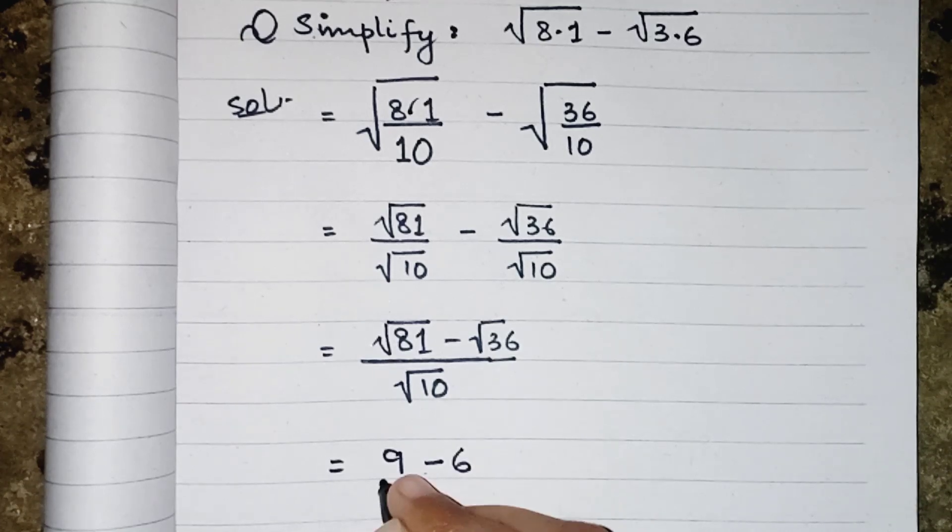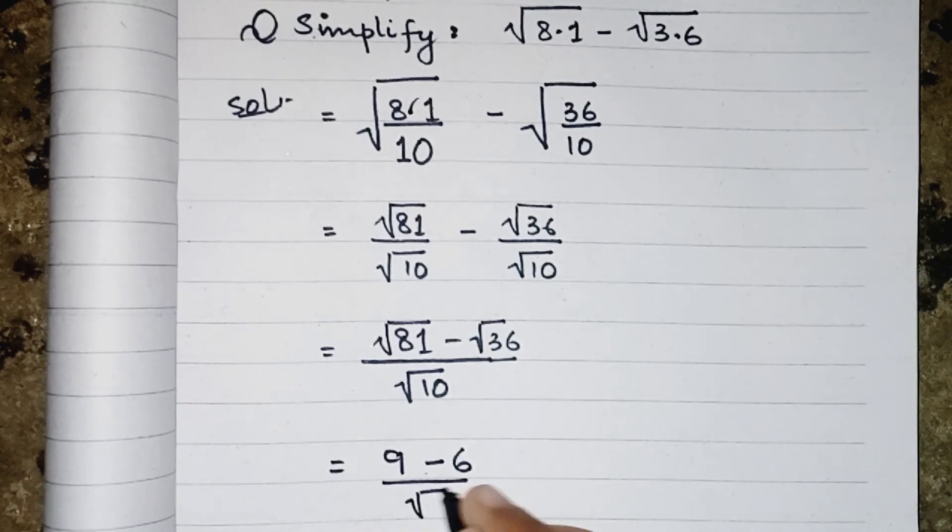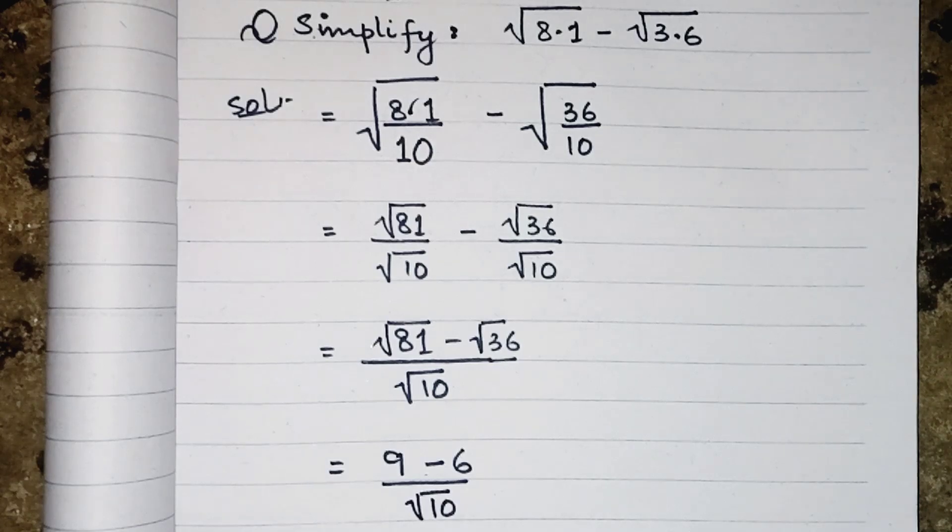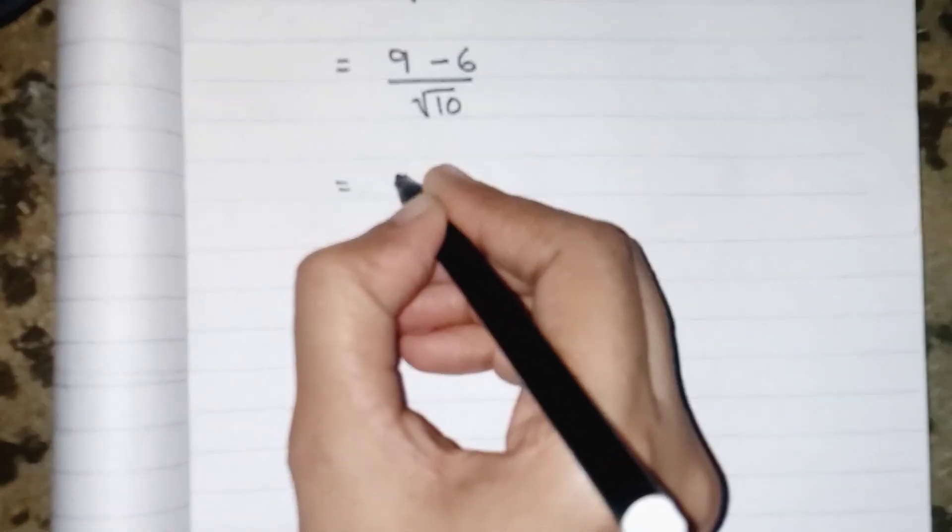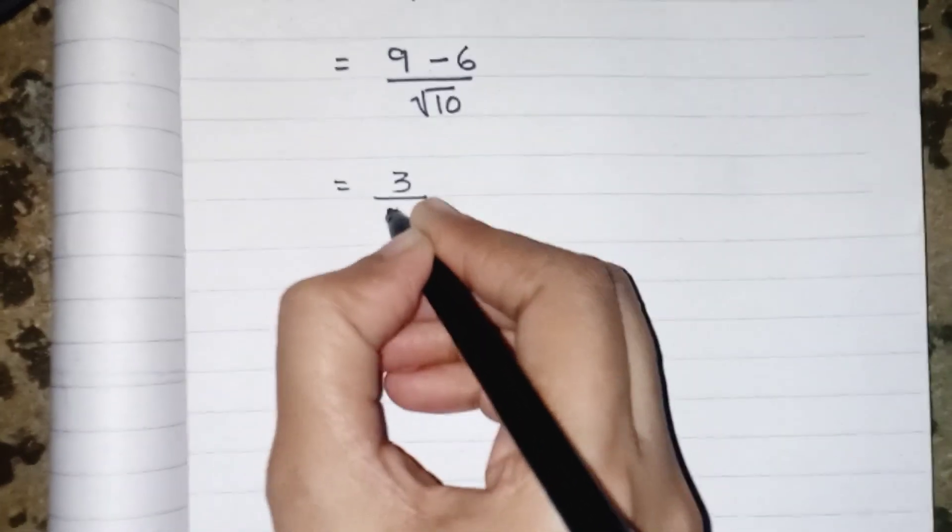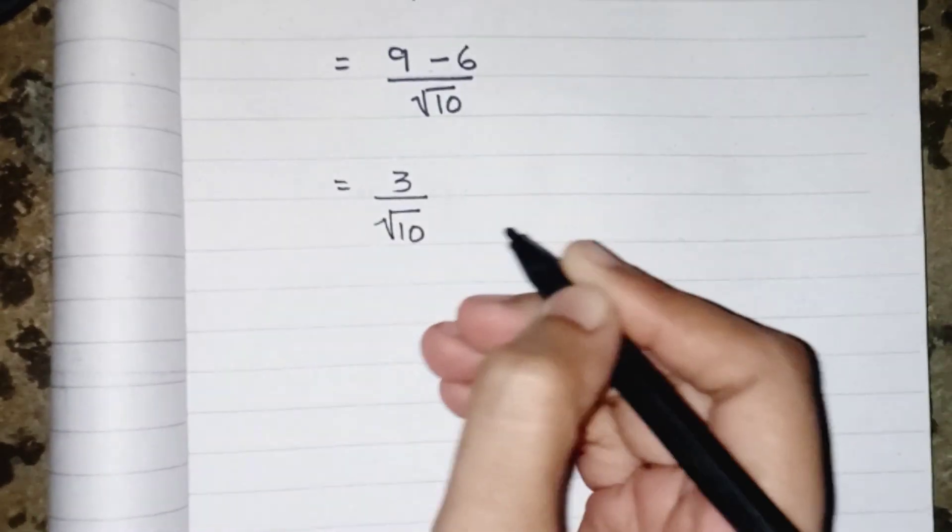After subtracting them, we will get 3 upon root 10. As we know that we never write root in denominator, so we have to rationalize this.